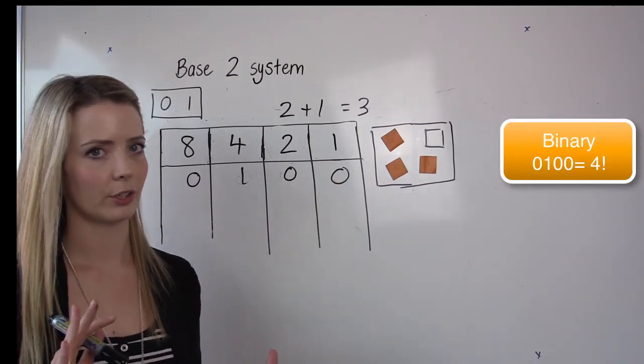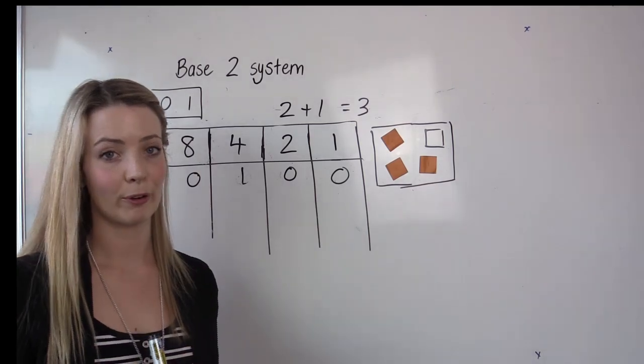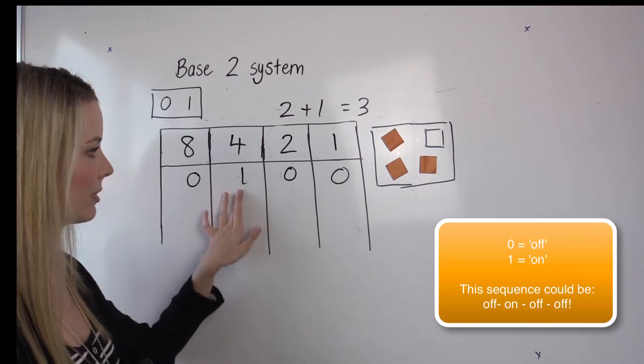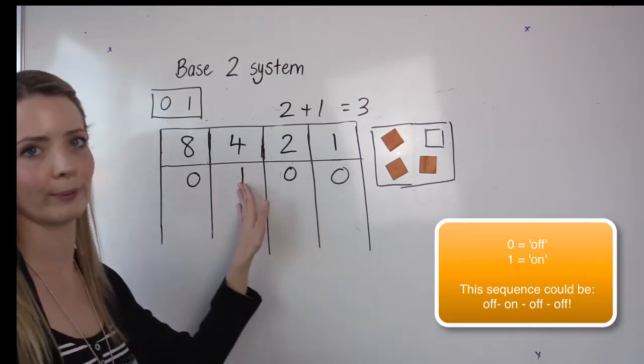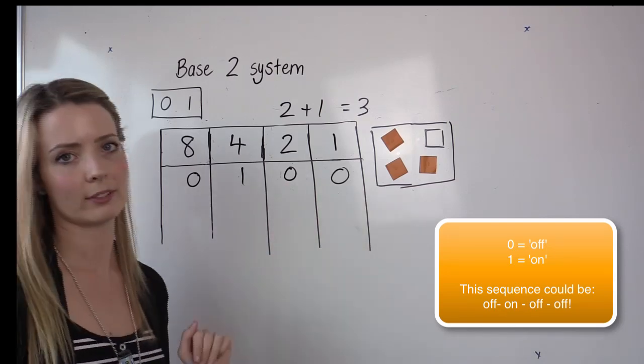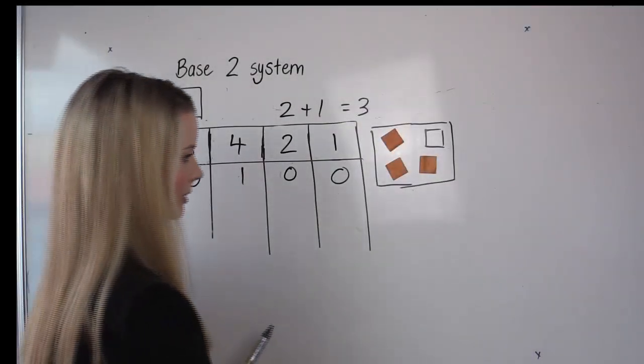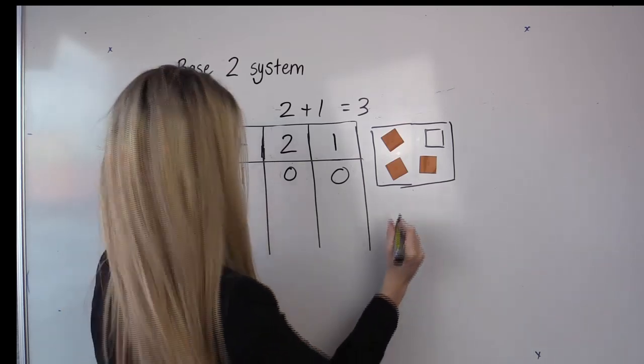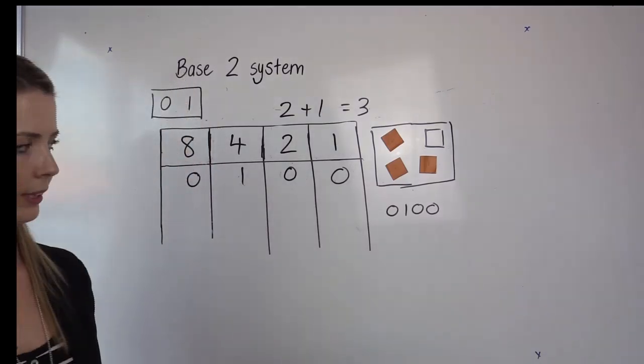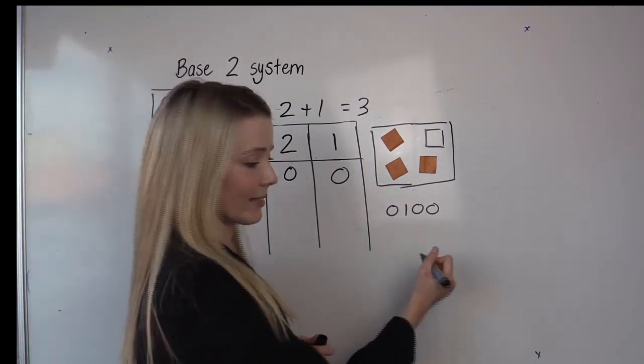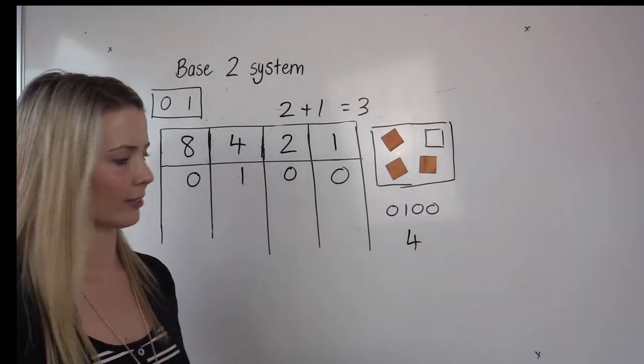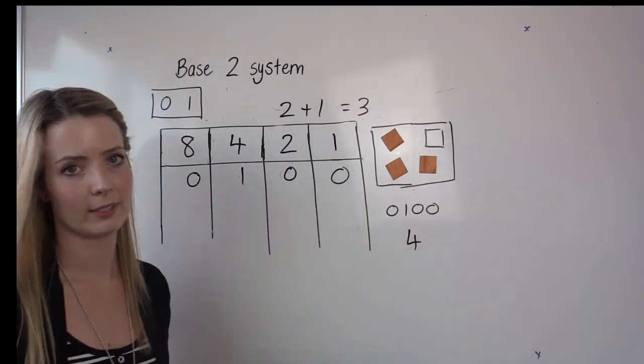Often we refer to binary as either being on or off. So you can look at this chart here as well and see that we have an on which is indicated by the one in the four column and off is for the two and the ones column. We're given numbers like this so it might look like zero, one, zero, zero. And instead of writing and using the base 10 system we would write four, we've written four using binary so we've used zeros and ones to say four.